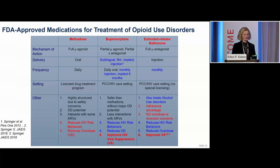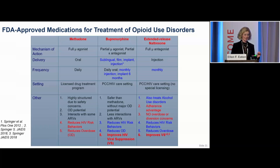Extended-release naltrexone is a full antagonist used as an injectable form. It can be used in primary care settings and also to treat alcohol use disorder — great for patients who use both opioids and have alcohol use disorder. It does have the adherence advantage, but for patients who fall out of care, they are opioid naive, since this is an antagonist. This is why it is not used as often as buprenorphine. If they fall out of care and no longer have the antagonist on board, they will be opioid naive and at very high risk for overdose. It does reduce HIV risk behaviors and overdose for those who remain engaged in care.